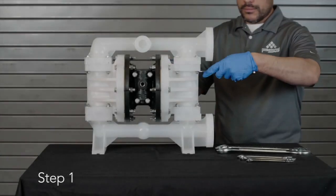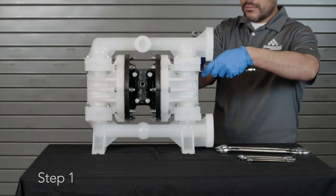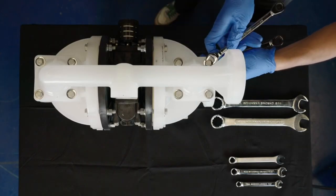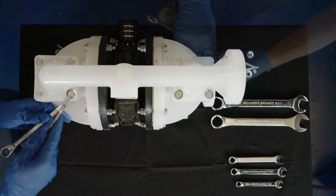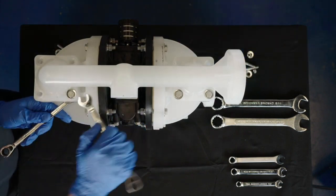Step 1: Using the ½-inch wrenches, remove 8 hex cap screws, 16 washers, and 8 nuts from the discharge manifold.